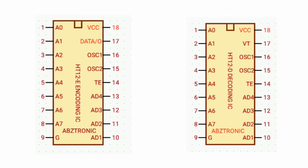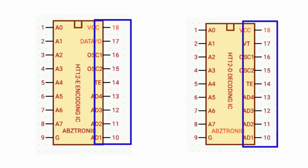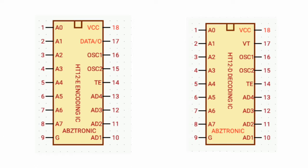Both encoding and the decoding IC pin from one side is 9-pin, and on the other side also 9-pin, which is a total of 18 pins.